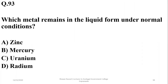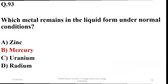Which metal remains in liquid form under normal conditions? The metal which remains in liquid form even at room temperature is mercury. So B is the right option.